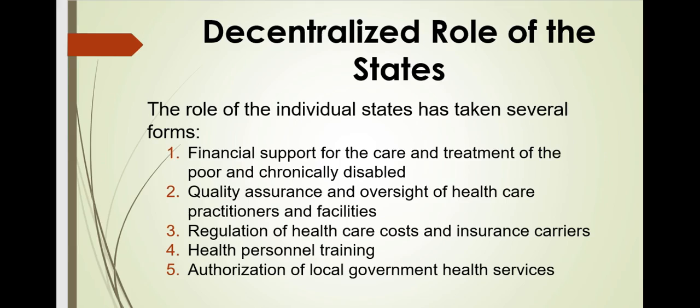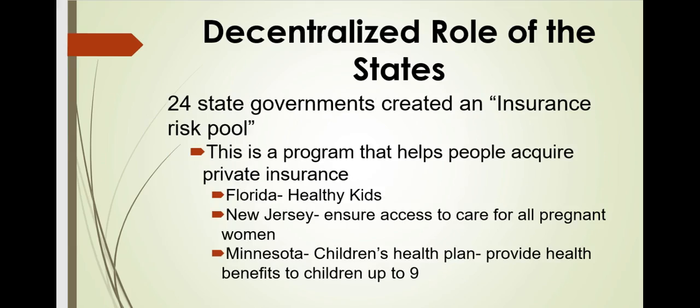The role of individual states has taken several forms: financial support for the care and treatment of the poor and chronically disabled — where Medicare and Medicaid come in — quality assurance and oversight of health care practitioners and facilities, regulation of health care costs and insurance carriers, health personnel training, and authorization of local government health services. Twenty-four state governments created insurance risk pools, which help people acquire private insurance otherwise unavailable due to medical risks, financed by individual premiums and taxes on insurance carriers.